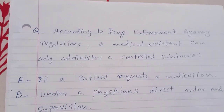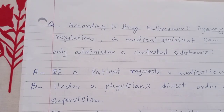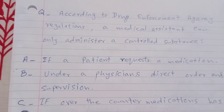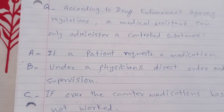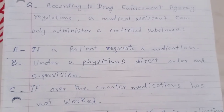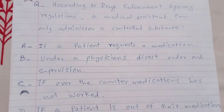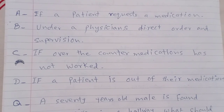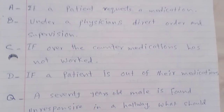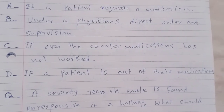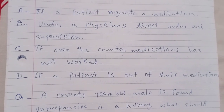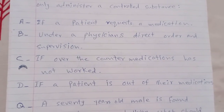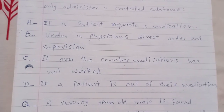According to Drug Enforcement Agency regulations, a medical assistant can only administer a controlled substance: A. If a patient requests a medication under a physician's direct order and supervision. B. If over-the-counter medications have not worked. C. If a patient is out of their medications. The answer is B: under a physician's direct order and supervision.